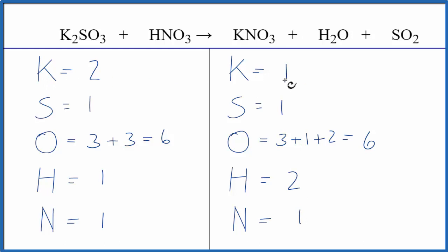Let's fix the potassiums first. We'll leave the oxygens and hydrogens till last. We have two here and one here, so let's put a coefficient of two in front of the KNO3. One times two, two potassiums, one times two, two nitrogens, and then update our oxygens.